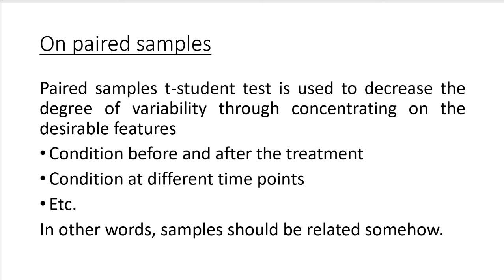Imagine that you analyze patients from two groups — one group is before the treatment and the other group is after the treatment. If you pick those patients randomly, you will deal with a higher degree of variability because you can pick people of different gender, different age, different habits, genetics, and so on. Consequently, you will have to collect more observations in order to make your sample representative.